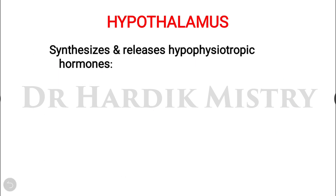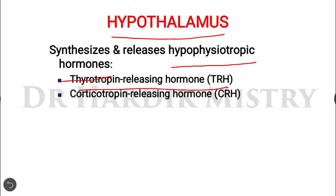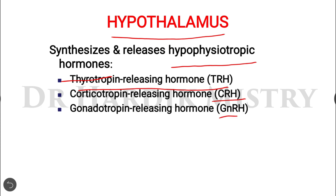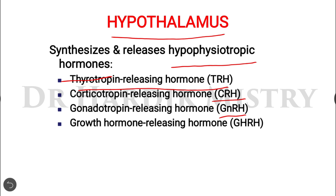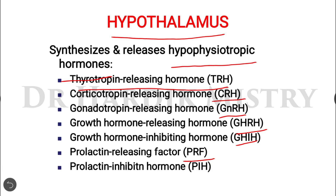The hypothalamus plays a key role by synthesizing and releasing different hypophysiotropic hormones: thyrotropin releasing hormone (TRH), corticotropin releasing hormone (CRH), gonadotropin releasing hormone (GnRH), growth hormone releasing hormone (GHRH), growth hormone inhibitory hormone (GHIH), prolactin releasing hormone (PRH), and prolactin inhibitory hormone (PIH).